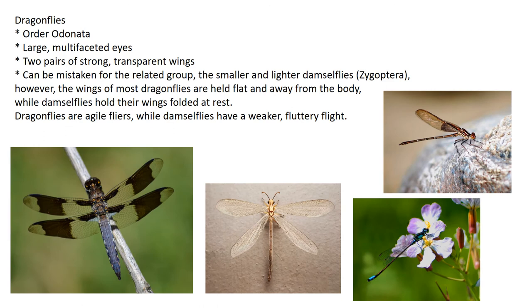Dragonflies are in the order Odonata. Odonata means they have large multifaceted eyes and two pairs of strong wings.